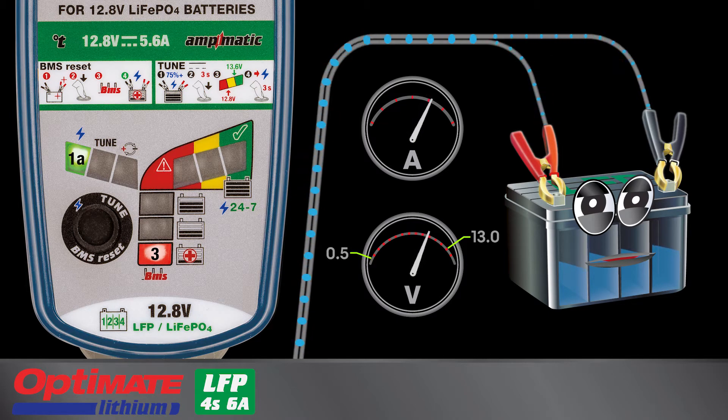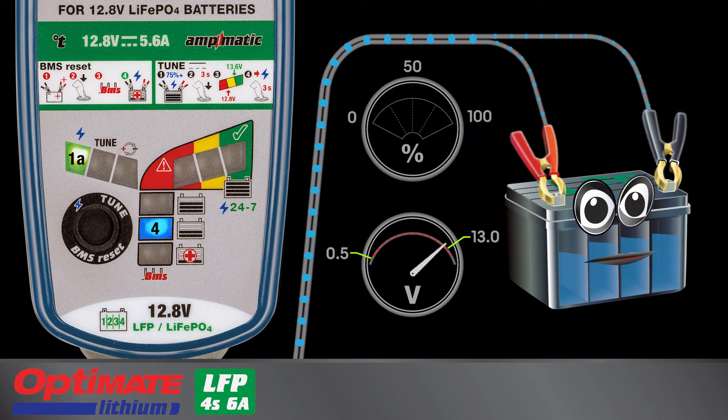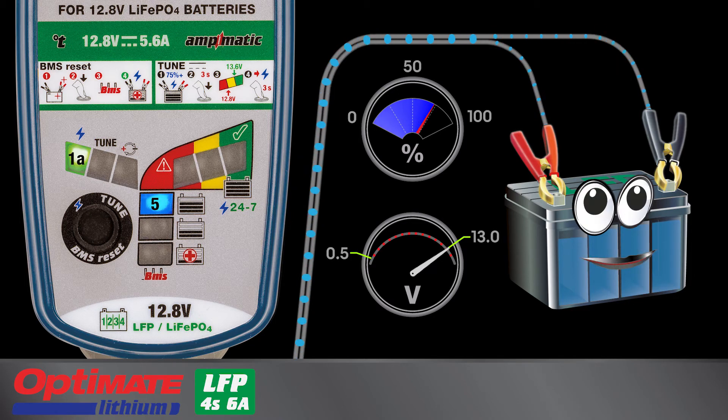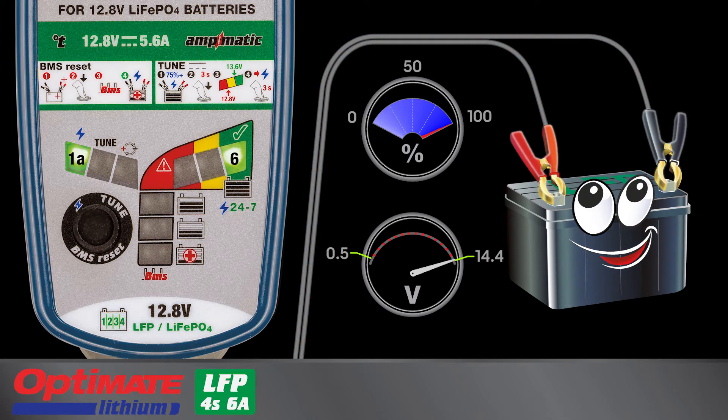During save mode, the battery's progress is actively monitored. Lamp 4 lights when charging has progressed from save mode or the battery is at least 50% charged at first connection. Lamp 5 lights when the charge level is 75% or higher. Lamp 6 lights when the battery has reached full charge.